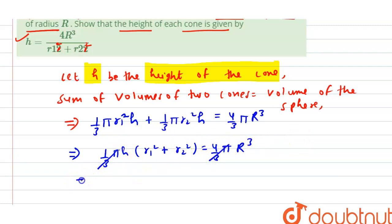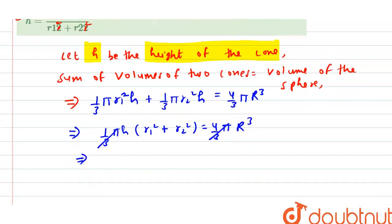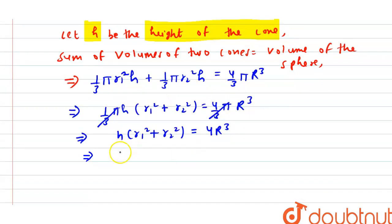We are left with H (R1² + R2²) equals 4R³. This implies that H equals 4R³ divided by R1² plus R2². So this is our final answer.